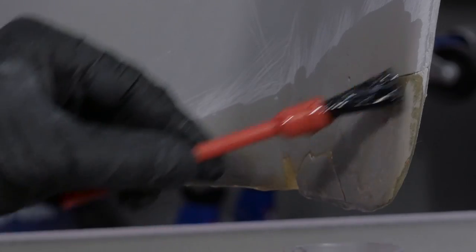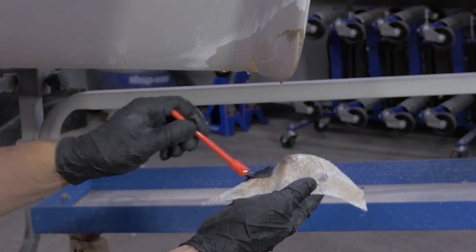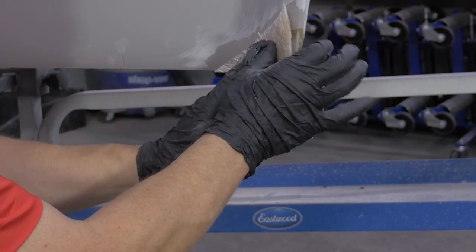Back-brush the sanded top side of the repair, add resin to one side of the matting, and place it on top of the repair.